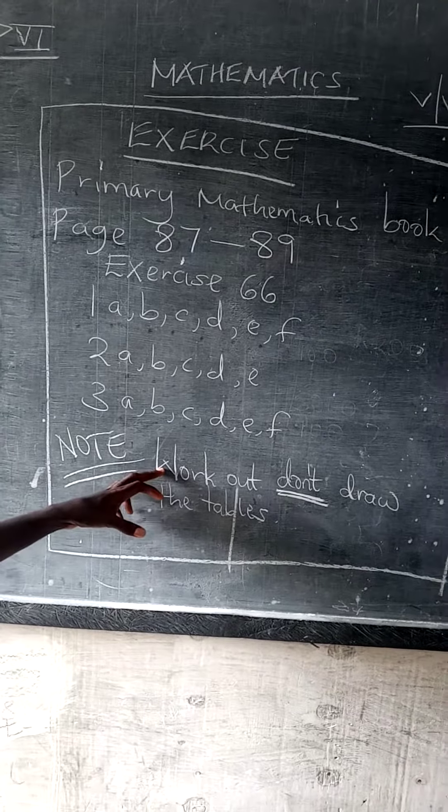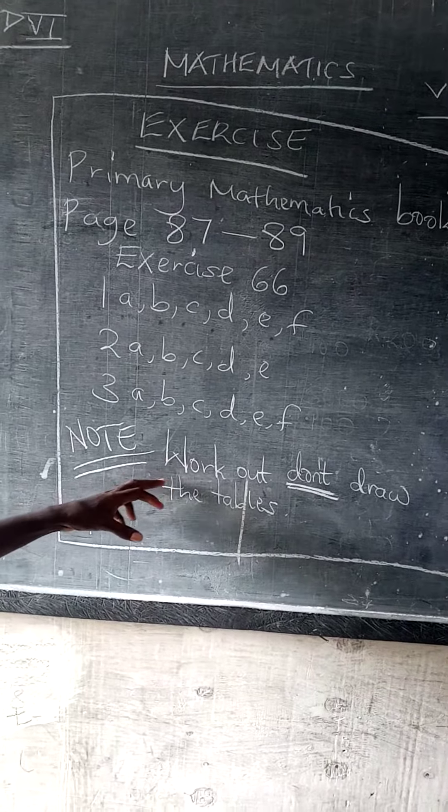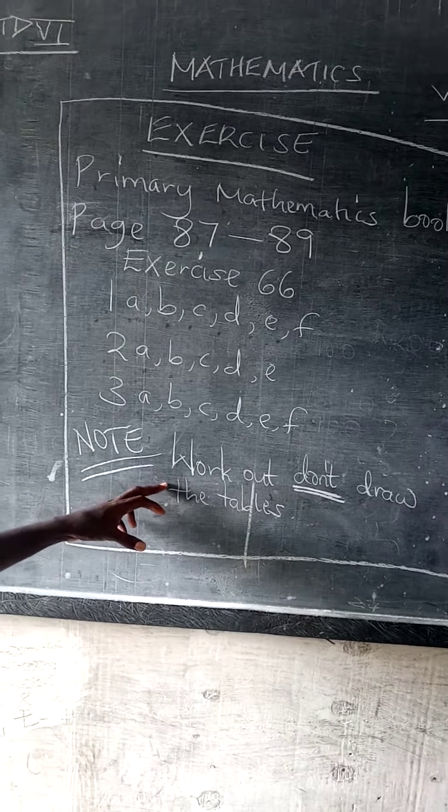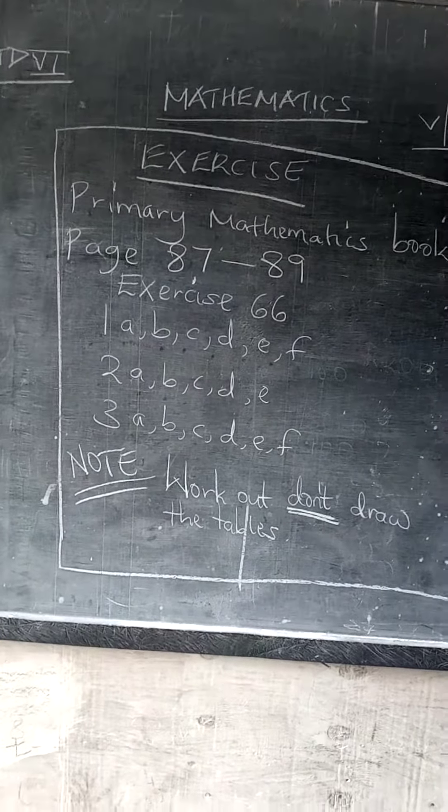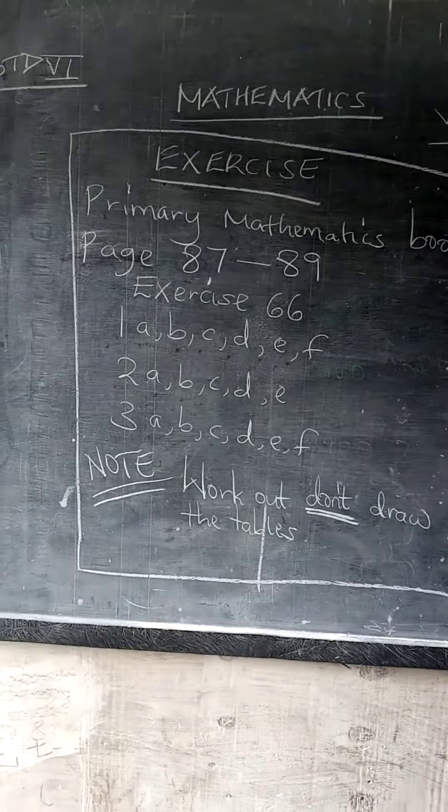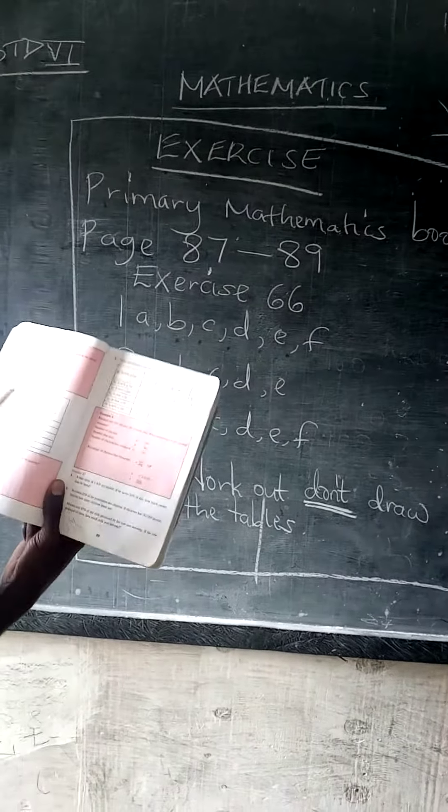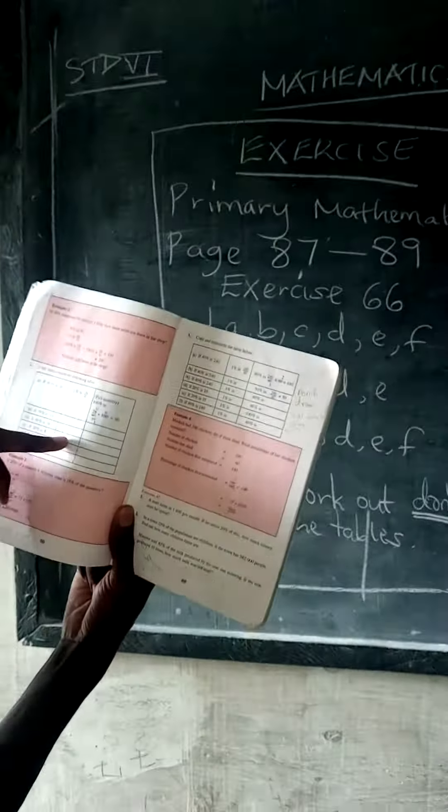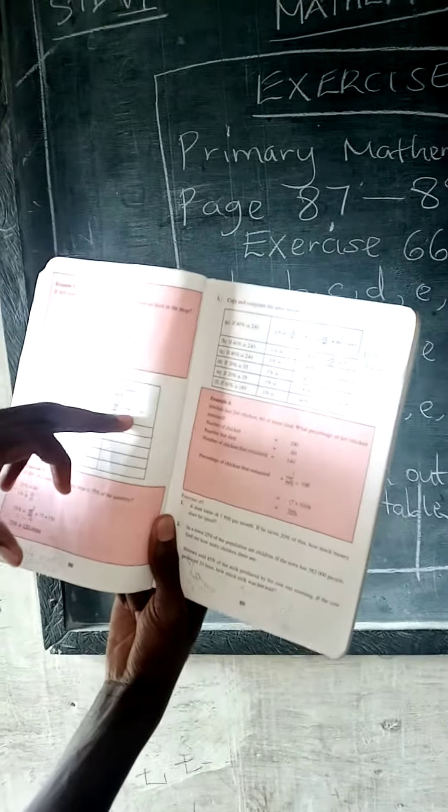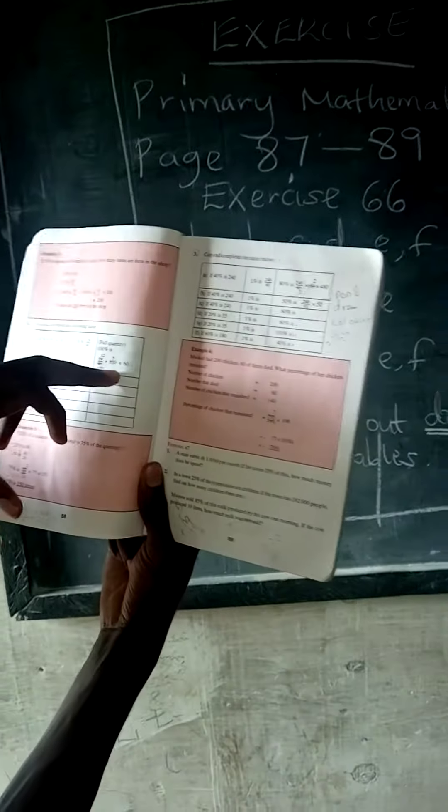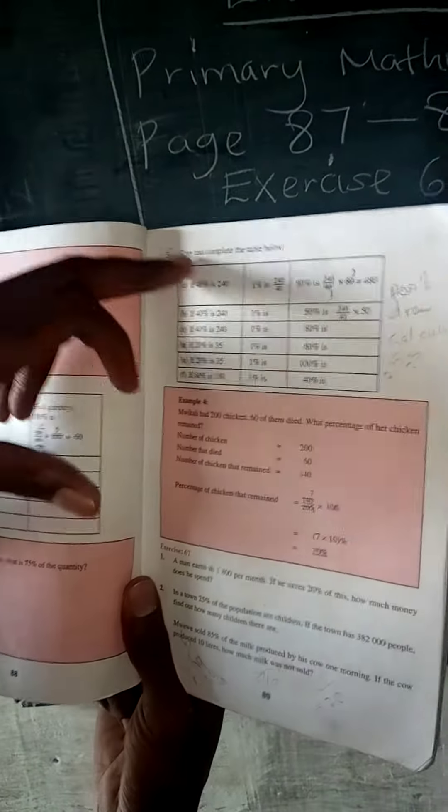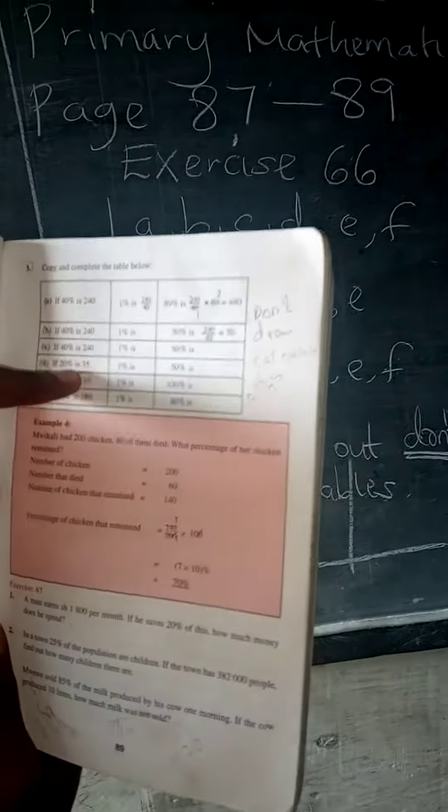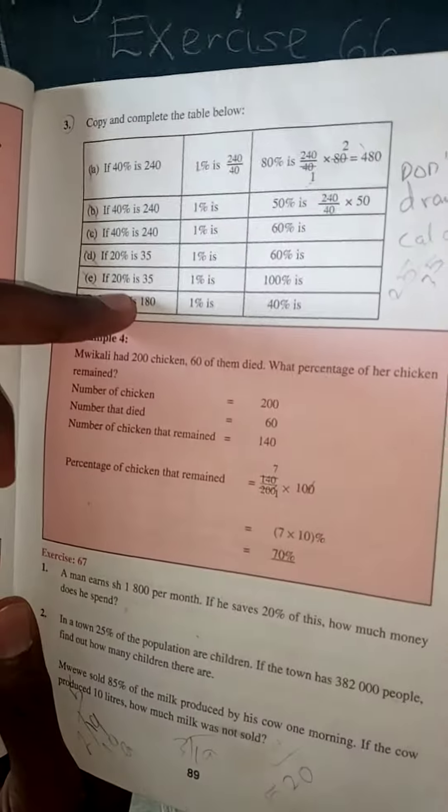Work out, don't draw the tables. What I'm meaning is these tables, you work out the way they are worked out here, don't draw. You work out as we always do in our books. Even number three here, you work out, don't draw the tables.